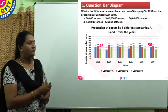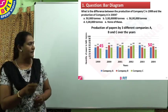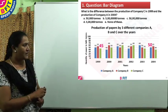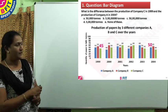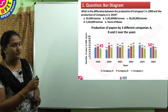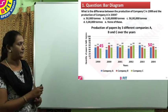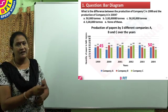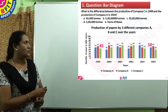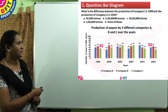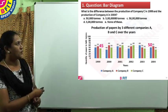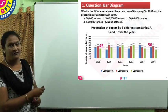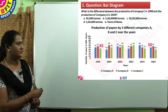The production of Company C in 1999 is 45 lakh tons, and for Company A in 2004, it is 50 lakh tons. The difference is 5 lakh tons. The answer is option B, 5 lakh tons.